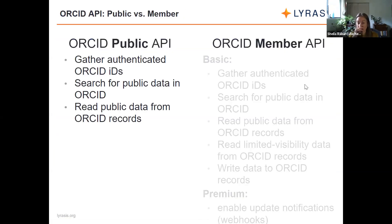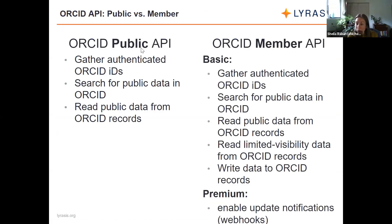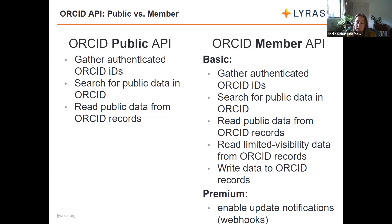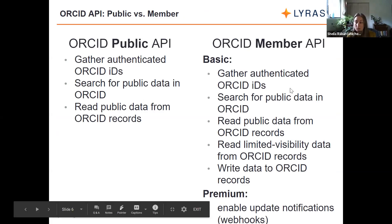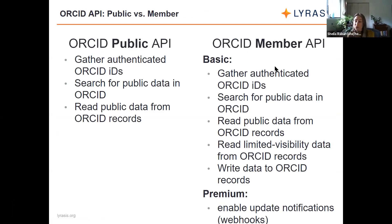ORCID does have a public API that is free and open and anyone can use. I believe everyone on this call is from an ORCID member organization. The member API allows you to do everything that the public API allows you to do with some additional things. The member API allows you to gather your researchers' authenticated ORCID IDs, search for public data in ORCID, read public data from ORCID records, read limited visibility data from ORCID records, and also write data to ORCID records.